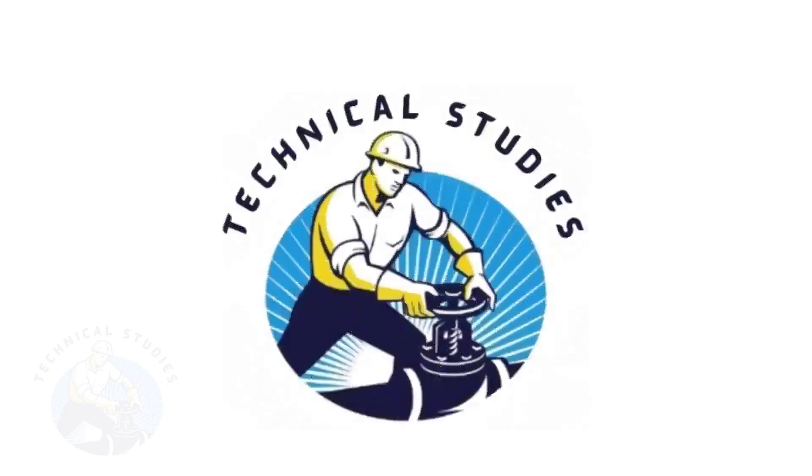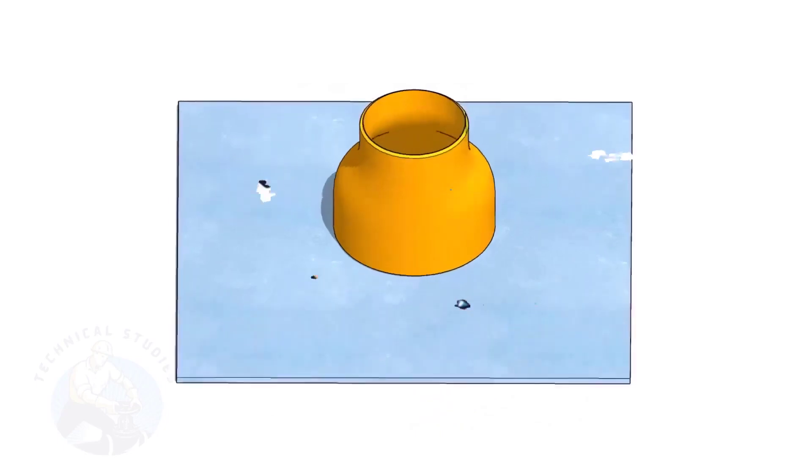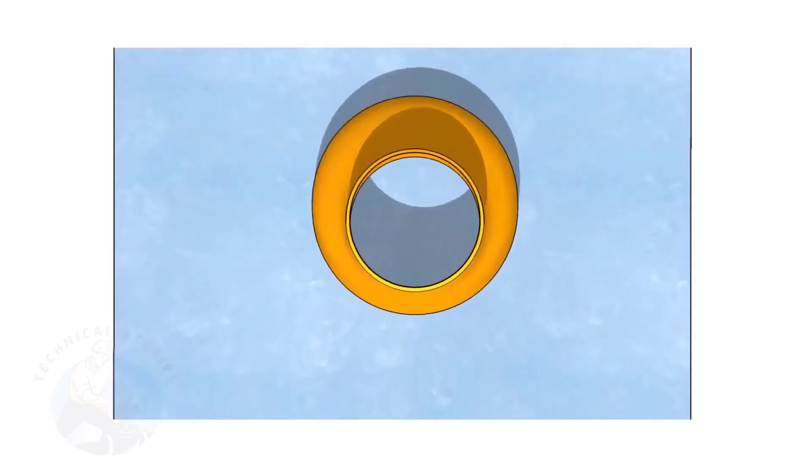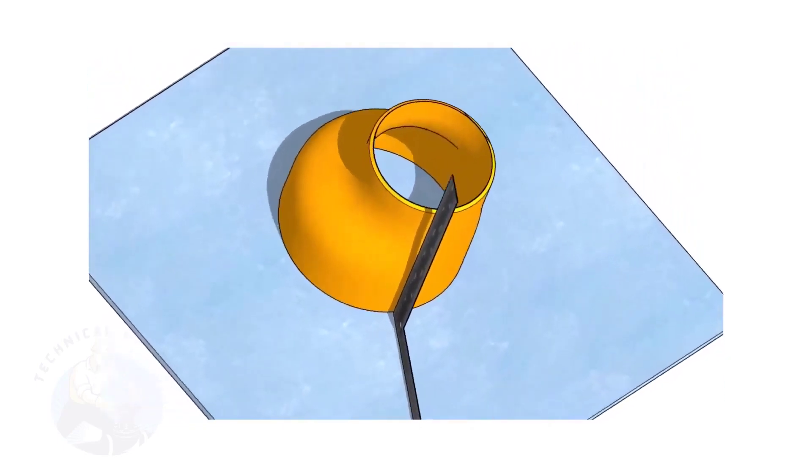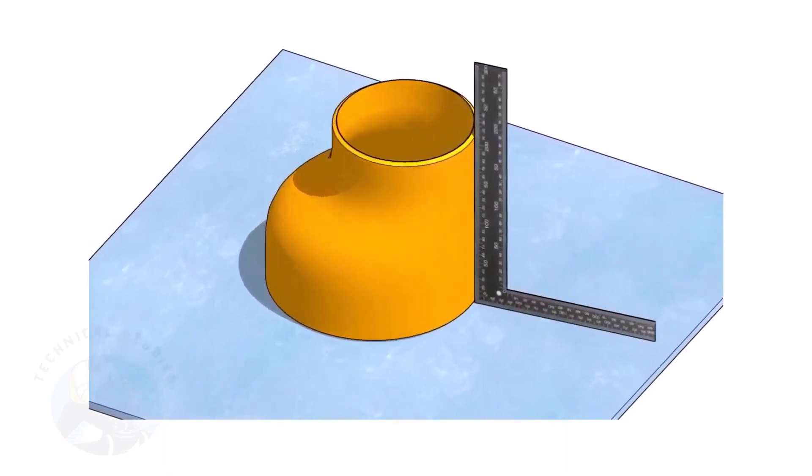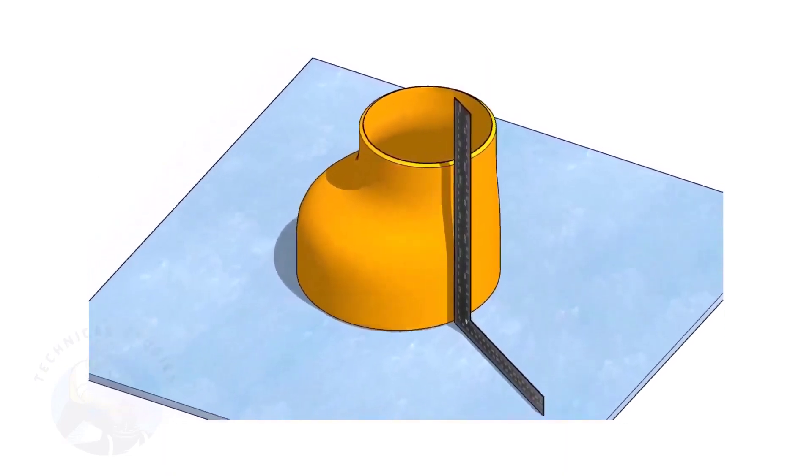Welcome to Technical Studies. Fitting an eccentric reducer to a pipe that is already fitted to another fitting like a flange, tee, elbow, etc., is a little tricky.